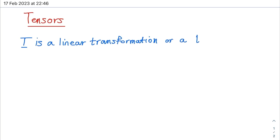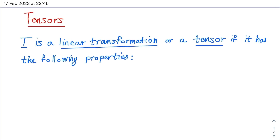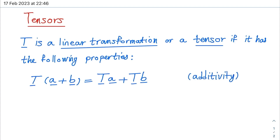T is a linear transformation or a tensor if it has the following properties. Transformation of vector A plus vector B is equal to transformation of vector A plus transformation of vector B. This property is known as additivity. In other words, the effect of the transformation on the sum of two vectors is equal to the sum of the effects of the transformation on each vector.